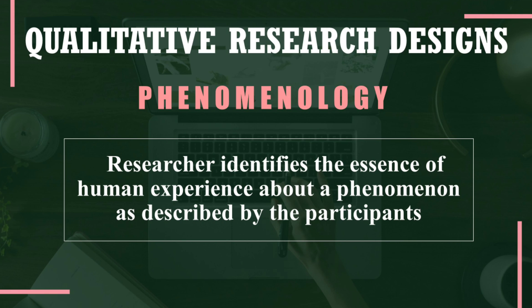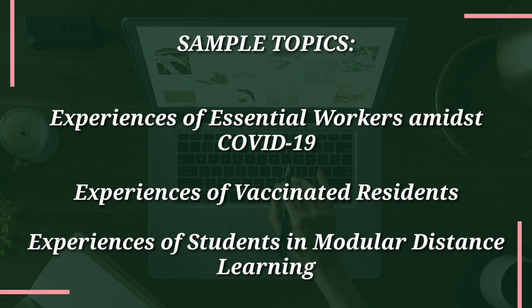The second qualitative research design is phenomenology. The researcher identifies the essence of human experience about a phenomenon as described by the participants. This highlights the lived experiences of a small number of participants about a certain phenomenon for a prolonged engagement to develop patterns and relationships of meanings. In case the researcher encountered a similar situation, he or she must set aside his or her own experiences so as to maintain the veracity and credibility of data collection. Examples include experiences of essential workers amidst COVID-19, experiences of vaccinated residents, and experiences of students in modular distance learning.